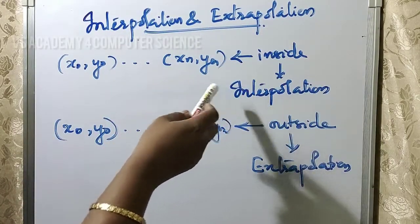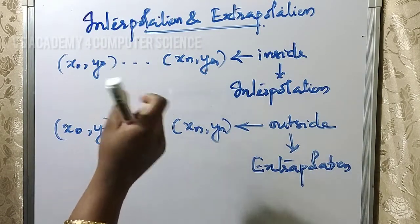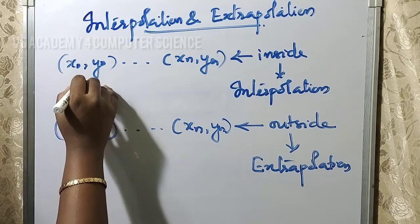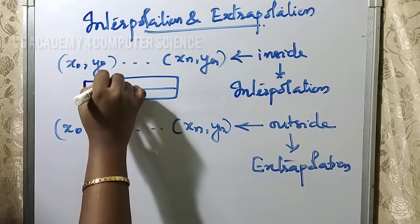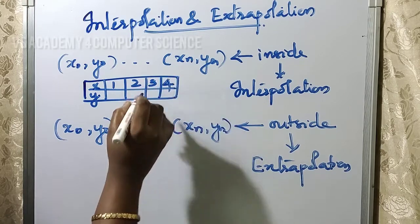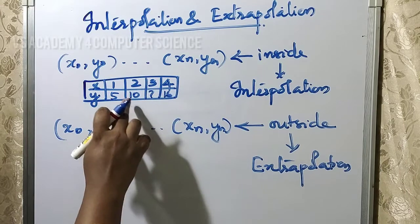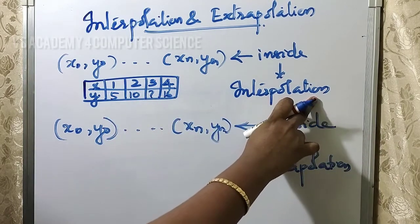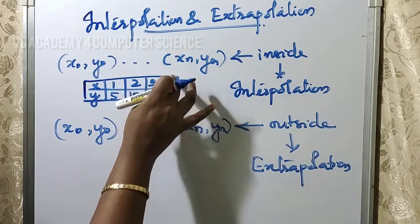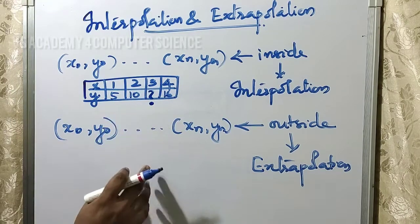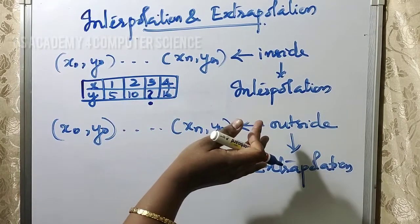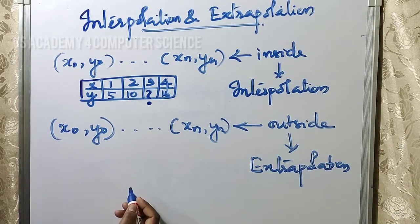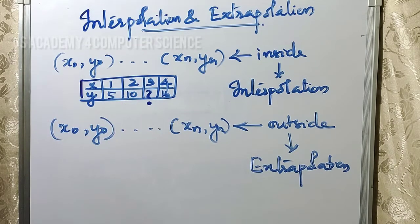What is interpolation and extrapolation? Interpolation means finding a value within a given limit — we are given starting and ending points, and we find values within that range. For example, x values 1, 2, 3, 4, 5 and corresponding y values 10, 16. Finding a value within that range is called interpolation. But finding a value beyond the limit — outside the given range — is called extrapolation. That is the difference between interpolation and extrapolation.